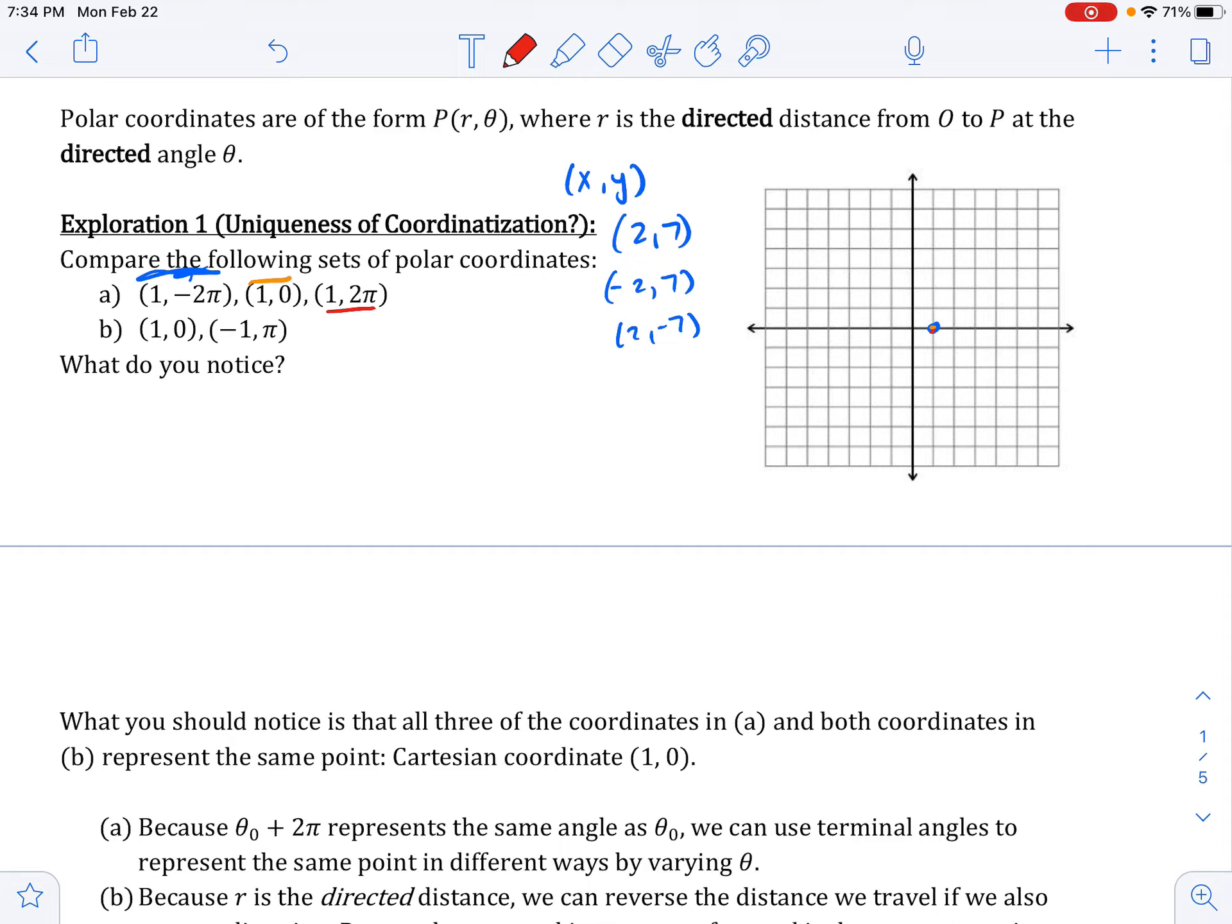And then we've already done that one. That was just our orange one from before. And then negative one pi, this is an interesting one. So we go pi distance. So we're facing this way, but our distance, our radius, is negative one. So we are facing this way, but we go backwards one. So we're here again. So that's what's going to happen when you have this negative radius. Essentially what happens is you face that direction of the angle, and then you go the other way. A negative distance.